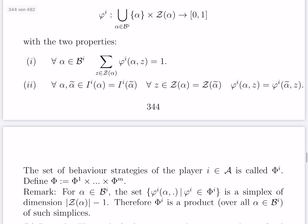The set of behavior strategies of player i is called big Phi upper index i. And big Phi is the product of all the sets of behavior strategies of players 1 to player m. Again here player 0 is taken out. I have not yet defined behavior strategies for player 0, so Phi is just the product of Phi 1 to Phi m.